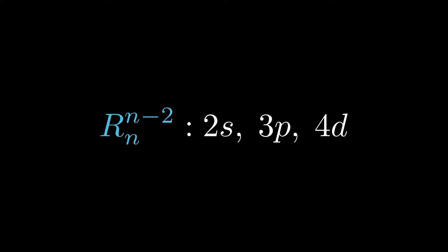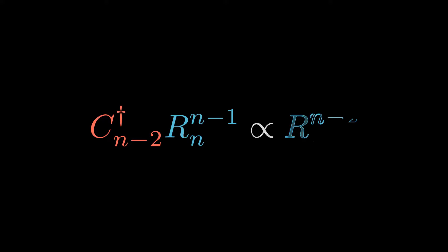By using the ladder operator C_{l-2}^† we established in the previous video on these circular orbits, we arrived at l equals to n minus 2 radial wave function. Beware that the ladder operator is now labeled by the target state.